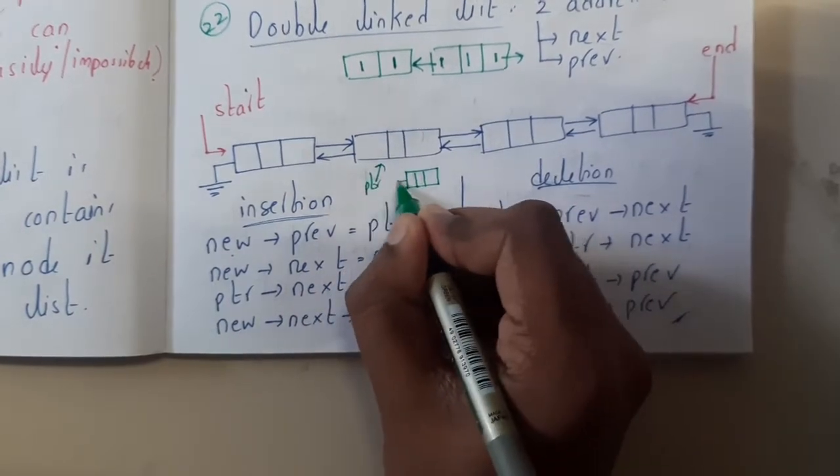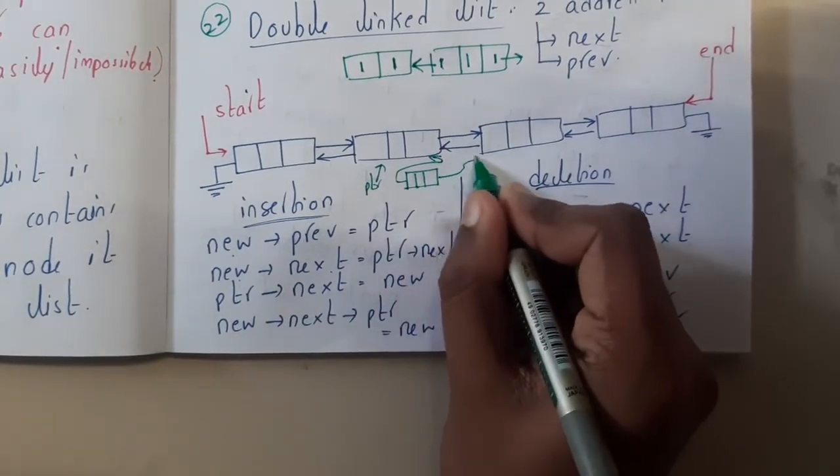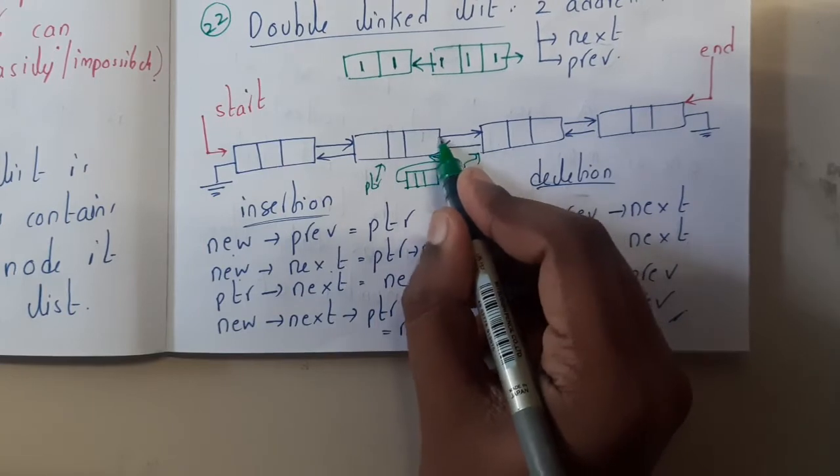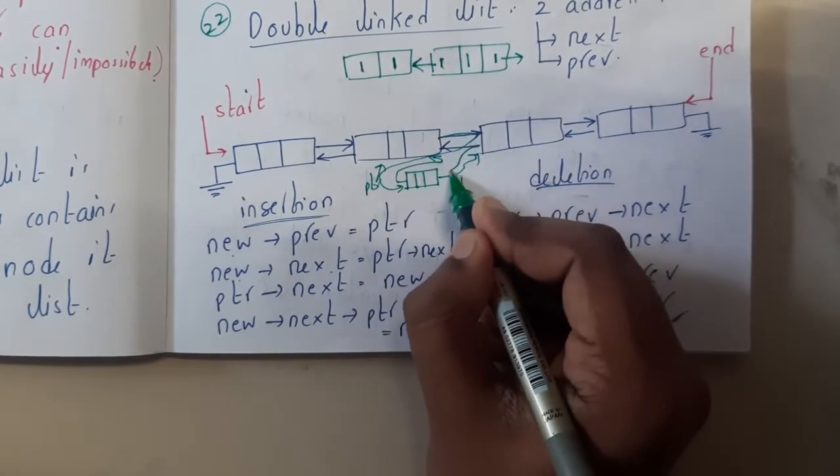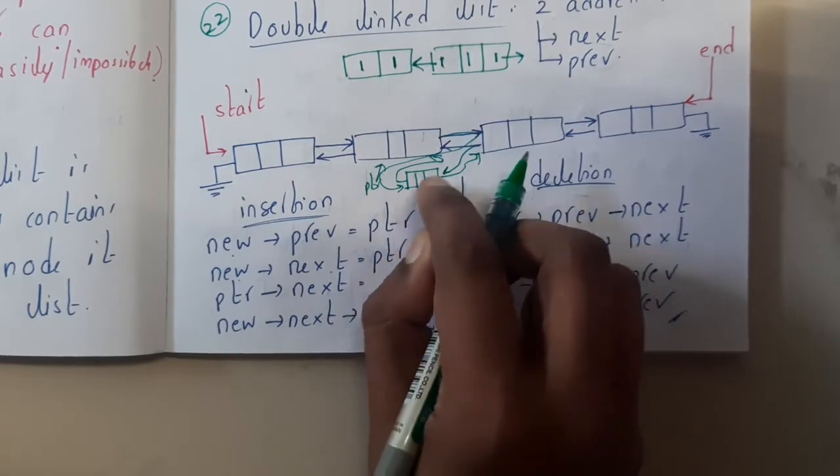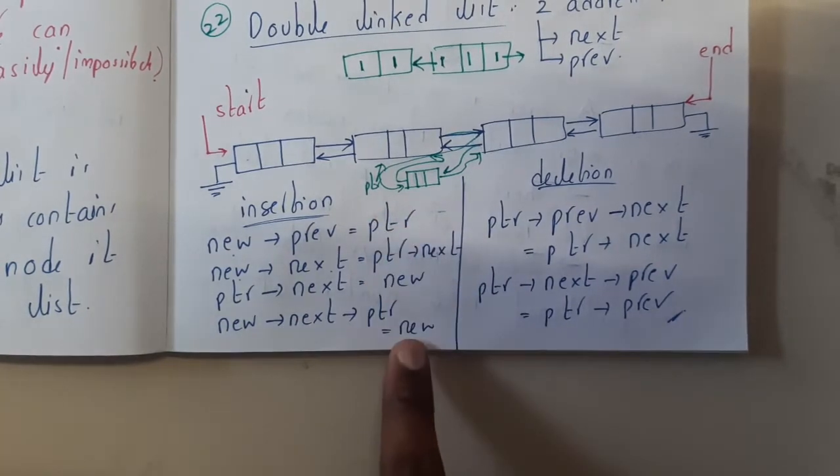You will be connecting this to here. After that, new's next is connected to ptr's next. After that, you will connect this pointer, break it and connect it to here, and break this pointer and connect it to here. So indirectly, you have pushed one slot in between. That is nothing but insertion. These are the exact steps written here.